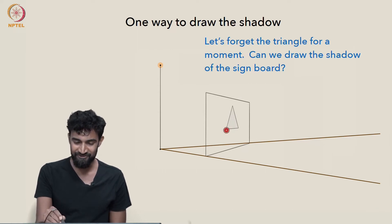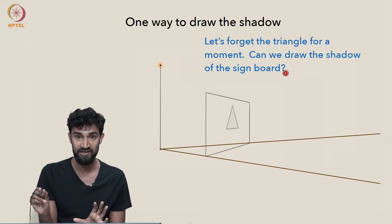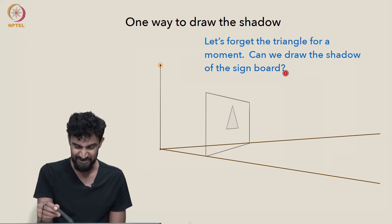Well, let's just forget about the triangle for one second, because I think we're onto something here. Can we try and draw the shadow of the sign board first, instead? Maybe that'll help us.